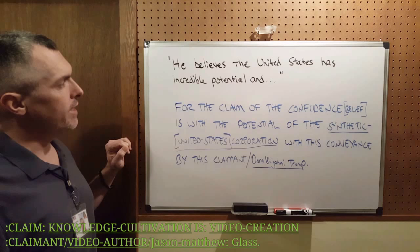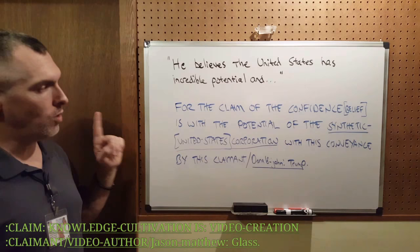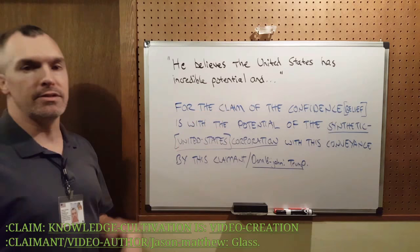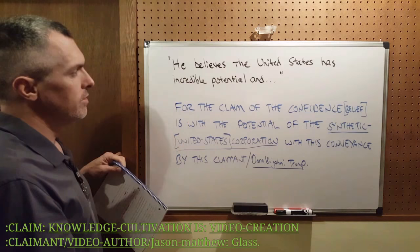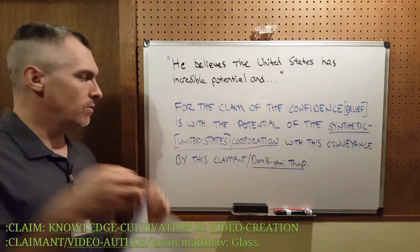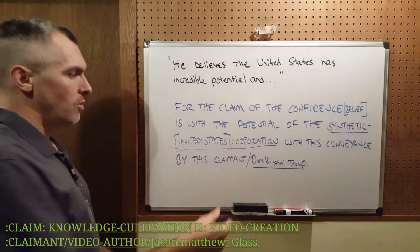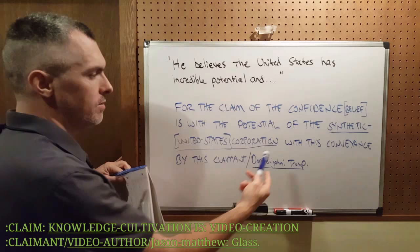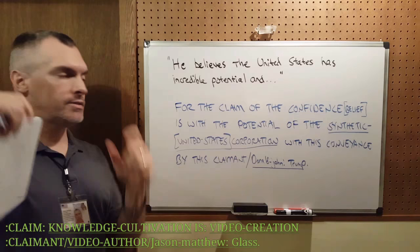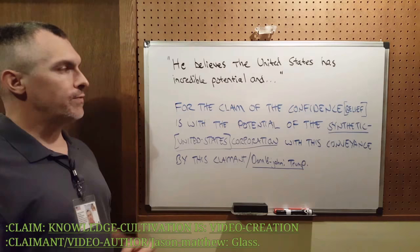The next sentence is: 'He believes the United States has incredible potential.' On quantum we have one thought, one claim per sentence. So this is a compound sentence on the website, so we have to break it into two parts. The first part has several no-contract words. So the way I broke it down into quantum would be: 'For the claim of the confidence belief is with the potential of the synthetic United States corporation with this conveyance by this claimant Donald-John:Trump.' And backwards that would be: 'For this claimant of this conveyance is with the synthetic United States corporation of the potential with the confidence belief by the claim.'